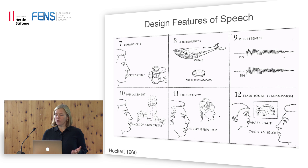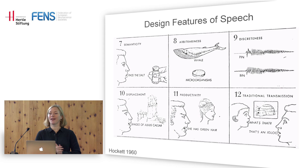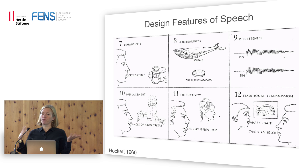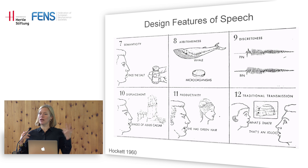We were not the first people to try this. Hockett in the 1960s made these funny drawings and listed a number of capabilities, including auditory feedback — which, as you know from a bad phone line where you hear your own echo, can really derail vocal production. This feedback loop is an important component of being able to speak fluently.